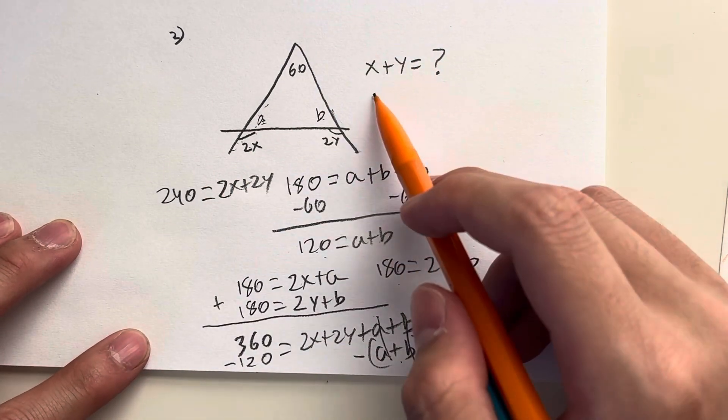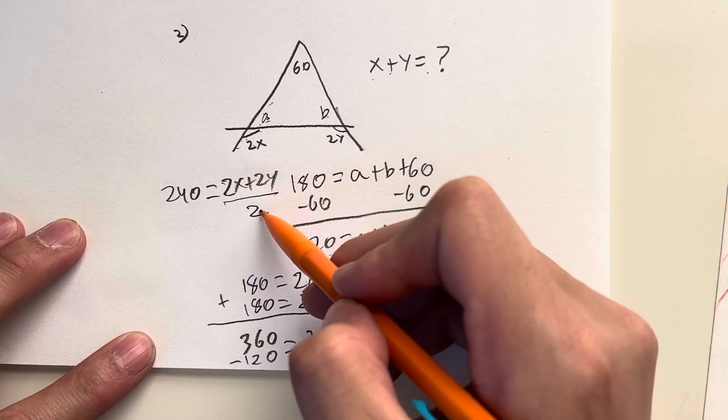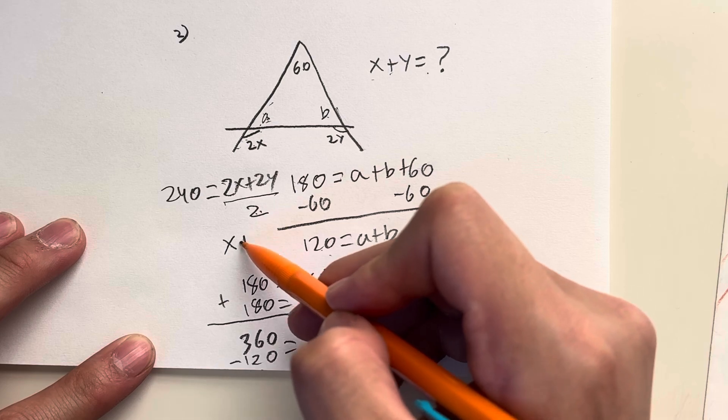But that's not my answer because the question is asking for x plus y. So all I have to do is divide this equation by 2 because 2x divided by 2 will give me x. 2y divided by 2 would give me y.